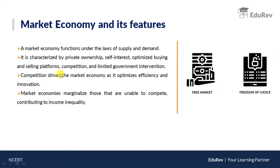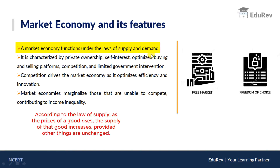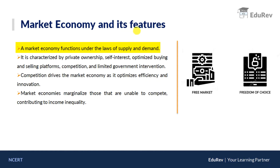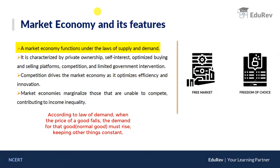A market economy functions under the laws of supply and demand. The law of supply states that if prices of a commodity rise, it signals producers that they can produce more and sell more because there is demand in the economy. The law of demand states that if prices are falling, demand for that good will rise. If consumers need to pay lower prices, the amount demanded will be higher — provided everything else remains constant, such as prices of substitute goods or complementary goods.